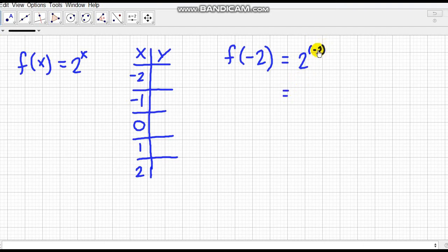And remember that if the exponent is negative, we get the reciprocal. So this becomes 1 over 2^2. And 2^2 is 4. So our function is 1/4. So if x is -2, our y is 1/4.